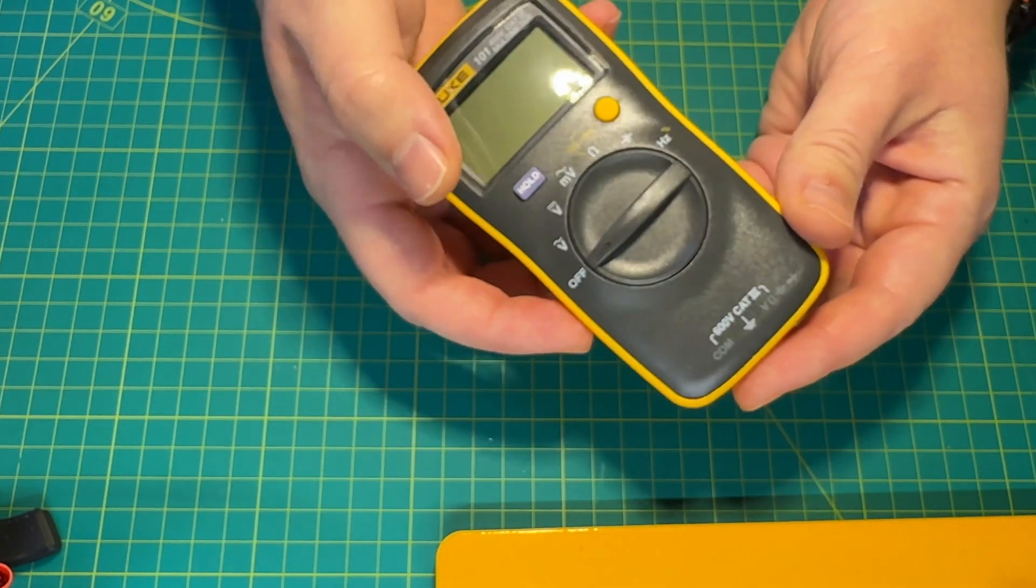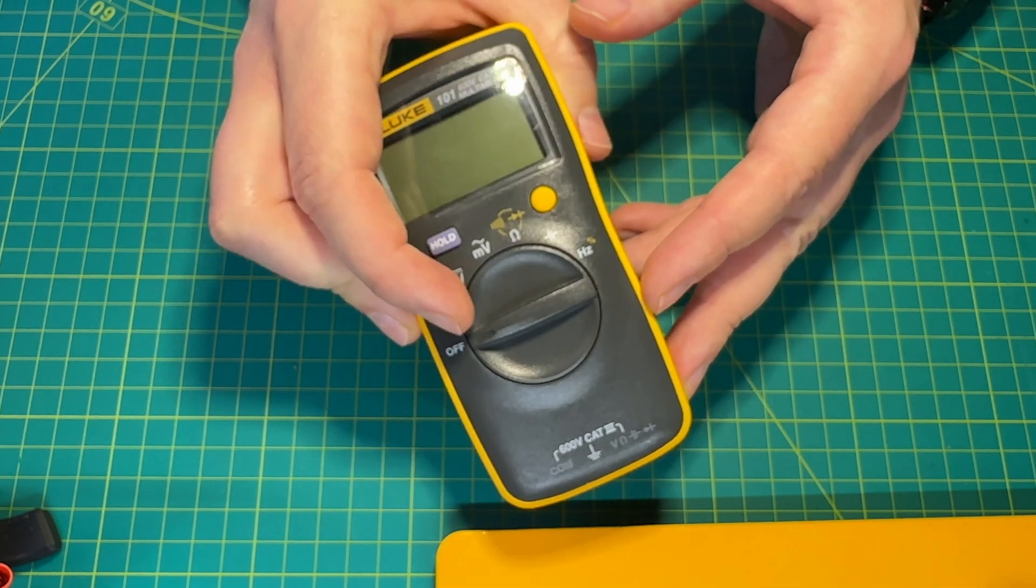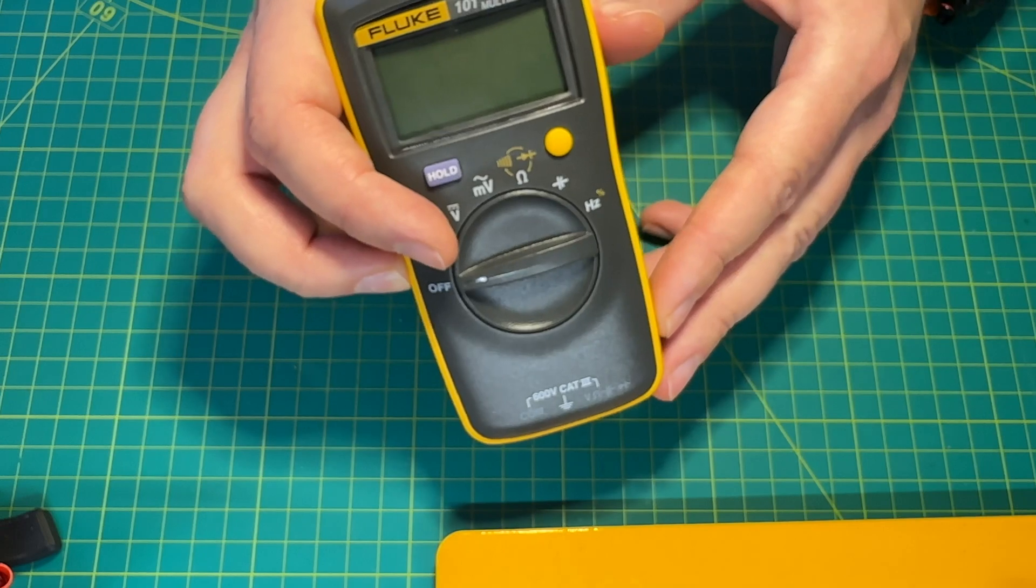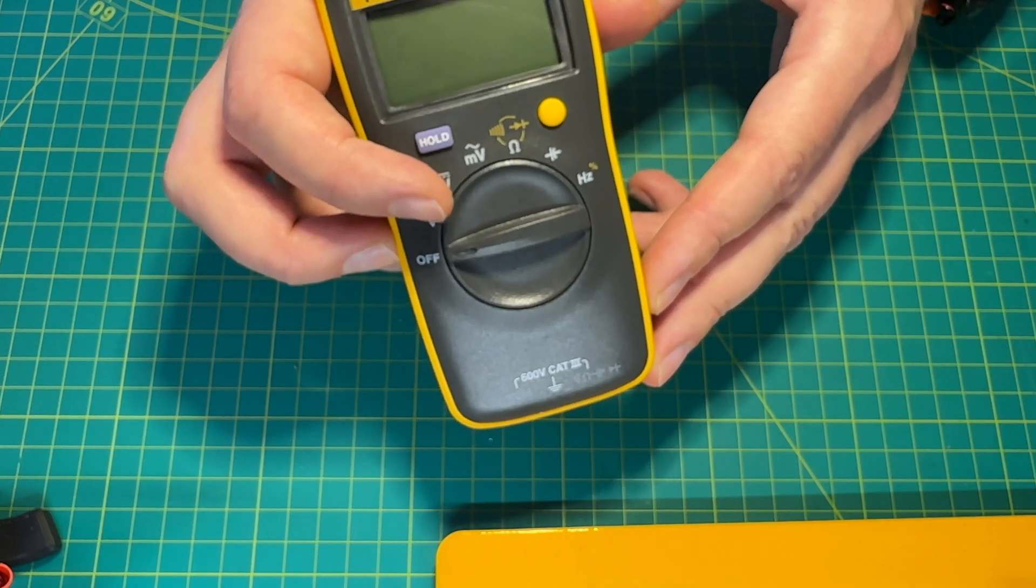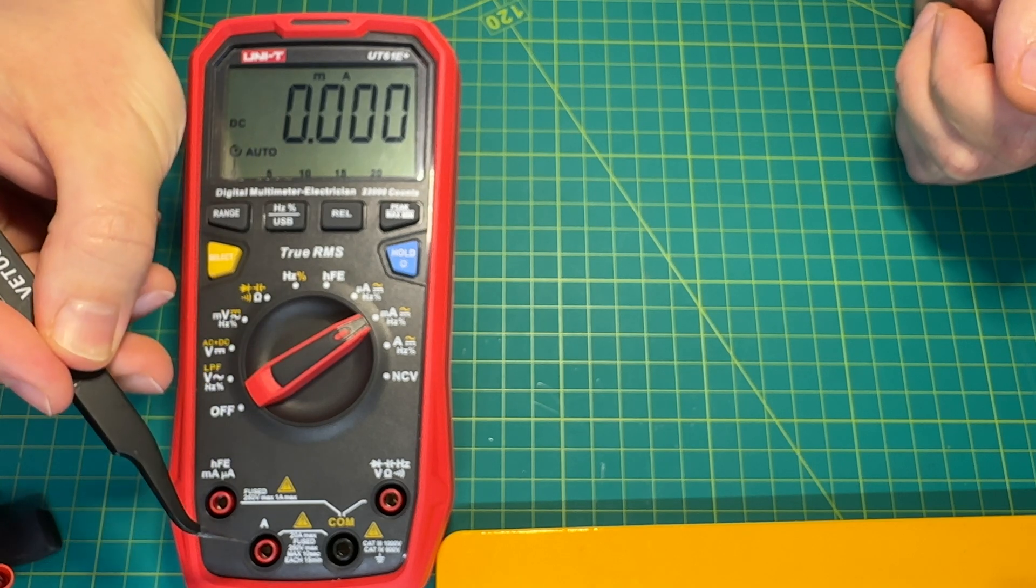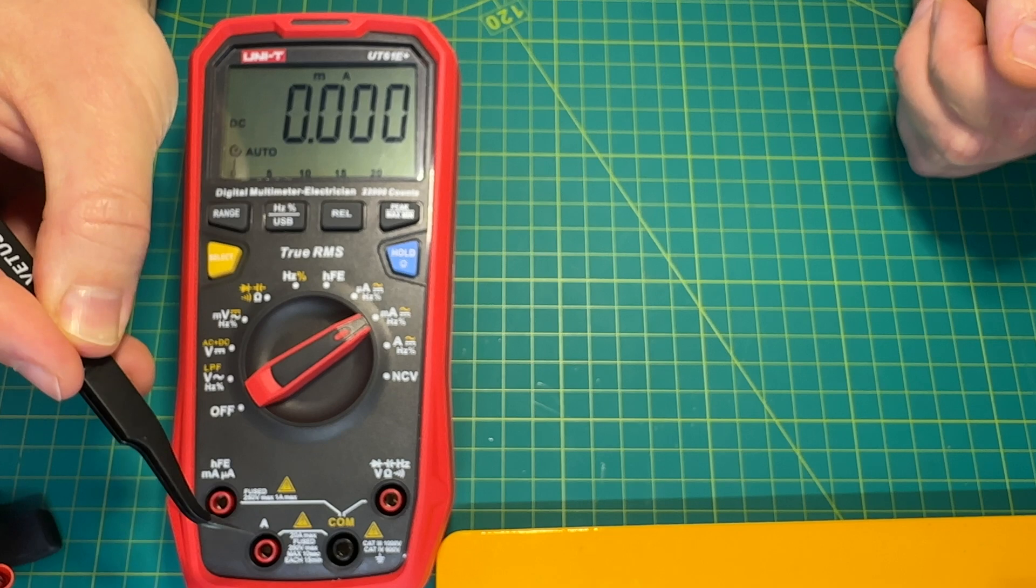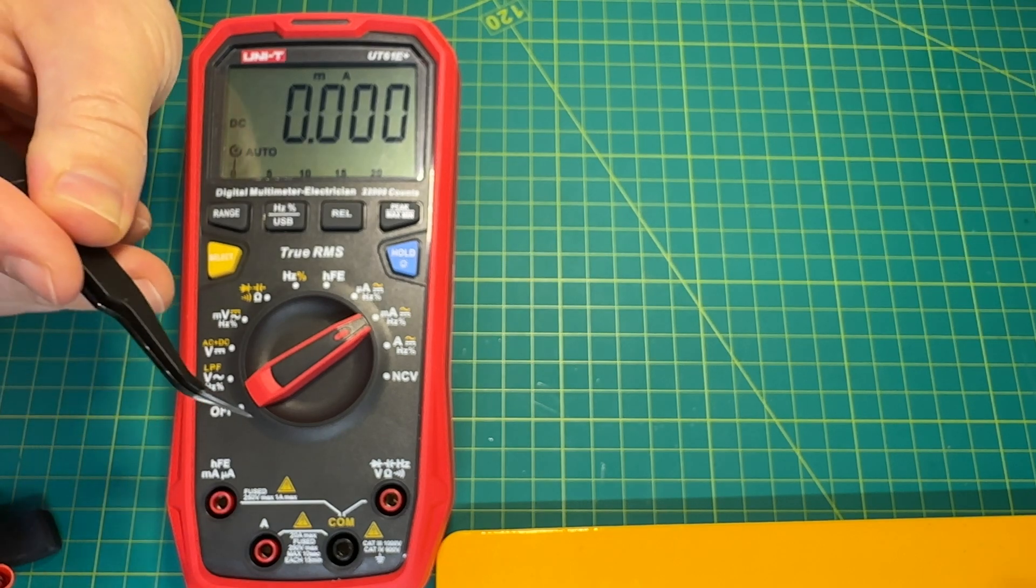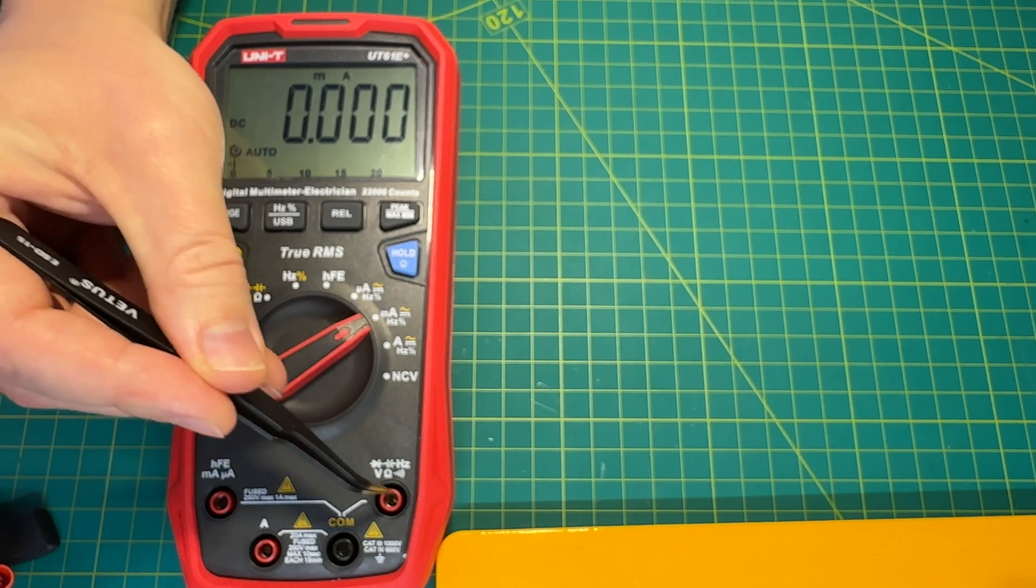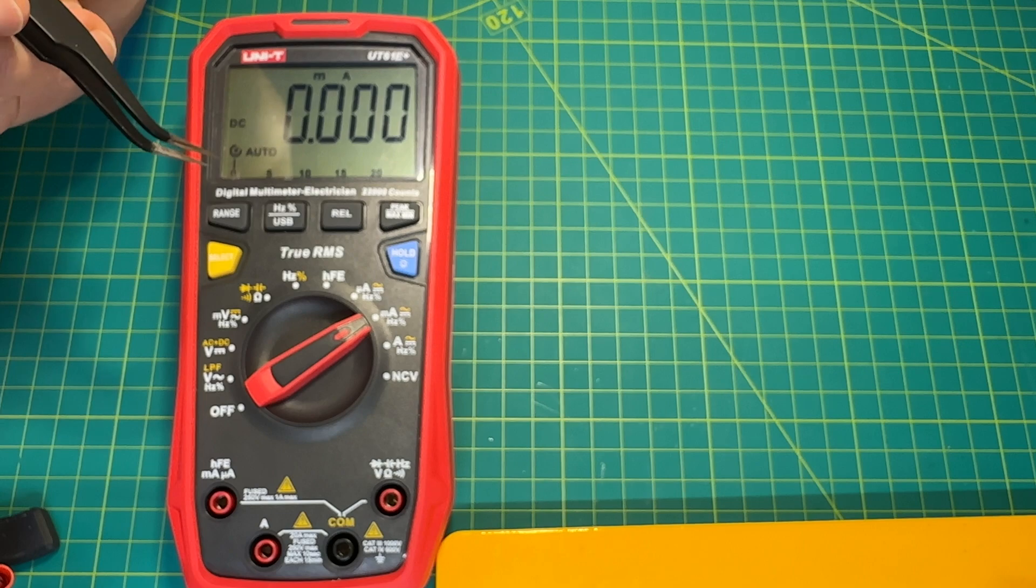When it comes to multimeters, you can get the simplest one that doesn't have any current measurement, and you can still measure current with it. Just watch the video I linked in the description. If you do get a unit with current measurements, make sure that the current measurements and everything else are separate. That way you don't accidentally short-circuit your device if your lead is plugged into voltage measurement and the device is set to measure current.